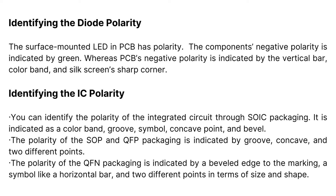You can identify the polarity of an integrated circuit through SOIC packaging, indicated by a color band, groove, symbol, concave point, and bevel. The polarity of SOP and QFP packaging is indicated by a groove, concave point, and two different points. The polarity of QFN packaging is indicated by a beveled edge, a symbol like a horizontal bar, and two different points in terms of size and shape.